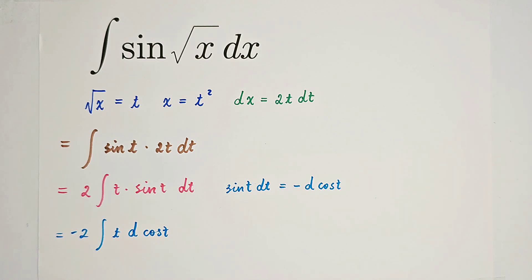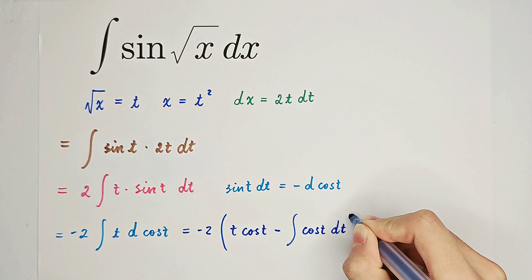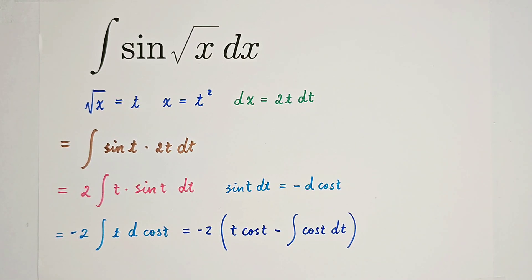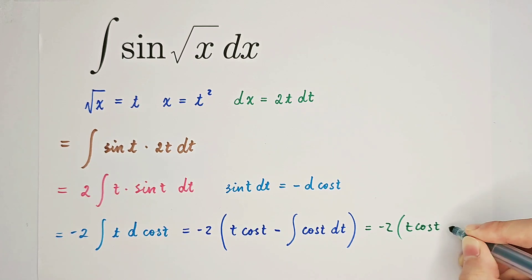Now integration by parts. So it's negative 2 times t cosine t minus the integral of cosine t dt. The integral of cosine t dt is very easy. It is just sine of t. So it is negative 2 times t cosine t minus sine of t.